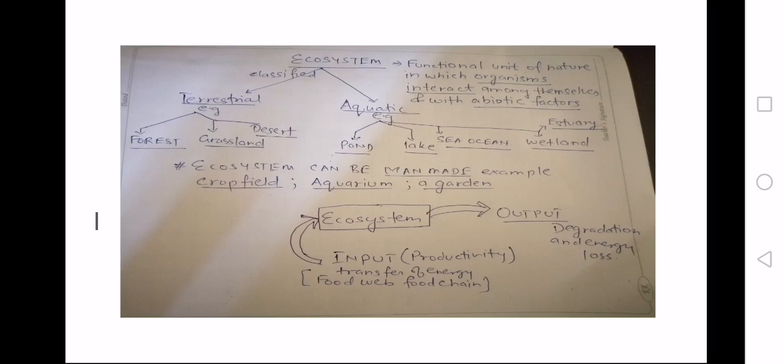Now, ecosystem can be man-made, for example the crop field, aquarium, and a garden.